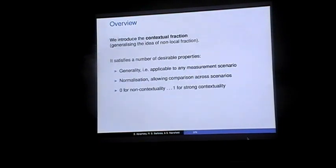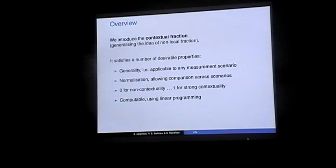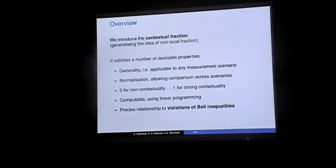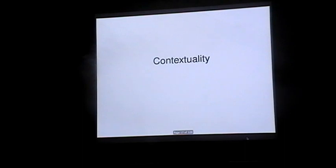In particular, the contextual fraction will be 0 whenever we don't have any contextuality, and 1 will correspond to the notion of strong contextuality that Kohei has introduced. Also, it's computable — we can use linear programming to compute this contextual fraction. Quite importantly, it has a very precise relationship with violations of general Bell inequalities, which is what we'll talk about in this talk.